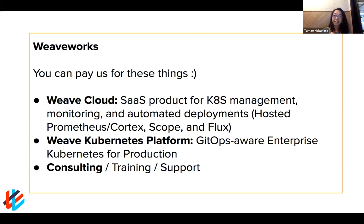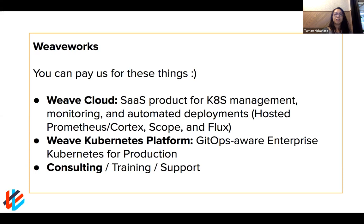We've been running Kubernetes on AWS for four years in production. Our team contributes upstream code to the Kubernetes community. Our new product this year is called Weave Kubernetes Platform, built upon the Kubernetes distribution we created for WeaveCloud, and it's very GitOps-aware. We also offer consulting, training, and support for those on different parts of their Kubernetes journey.